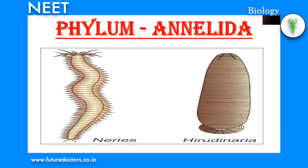Annelids show organ system level of organization and tube within a tube plan. They show true cephalization. Annelids have a true coelom and are therefore called coelomate animals — it is formed by splitting of mesodermal epithelium (schizocoelom). The coelomic fluid acts as a hydrostatic skeleton. Annelids move by paired lateral hollow fleshy appendages called parapodia or chitinous setae. The digestive tract is straight and complete, starting from mouth and ending at the anus. Respiration occurs through skin, gills or parapodia. They are the first animals with a closed circulatory system. Excretory organs are nephridia in each segment.